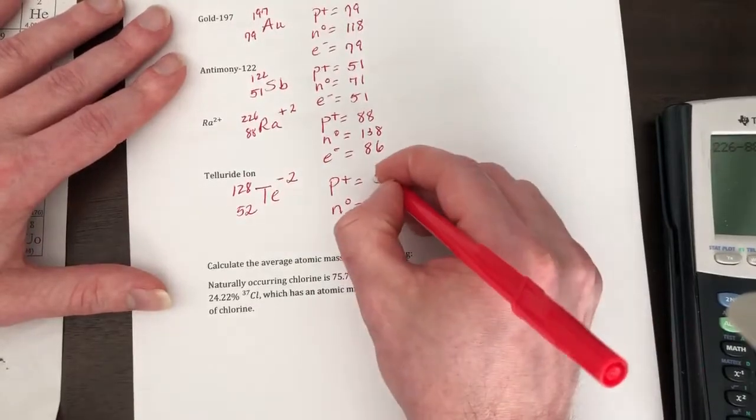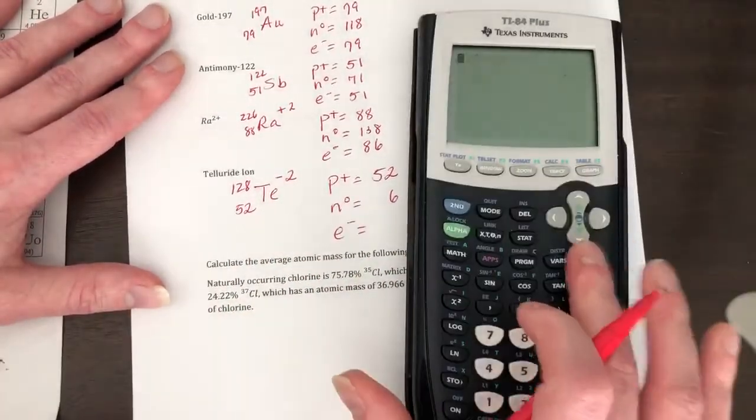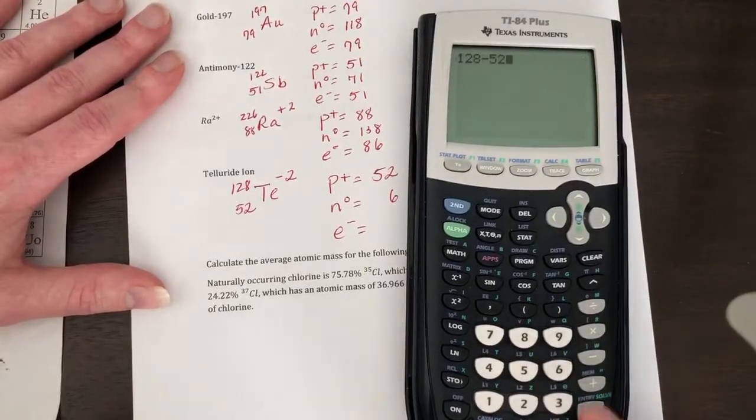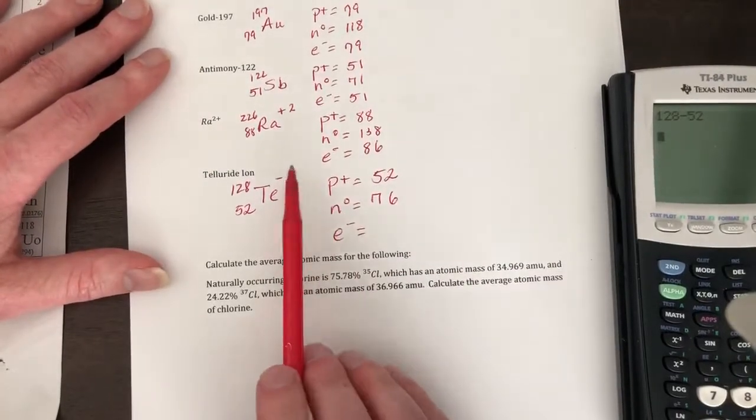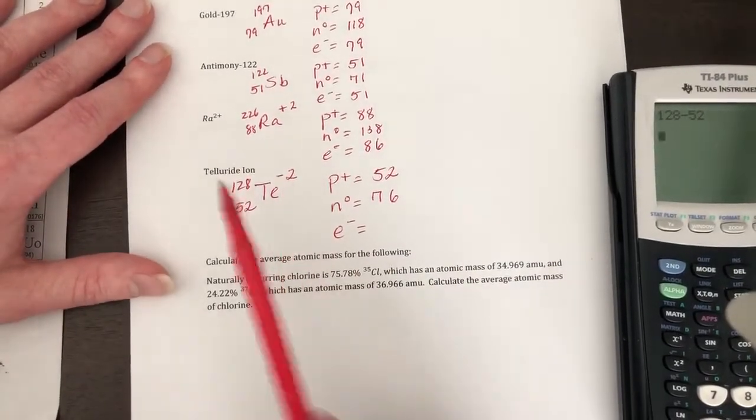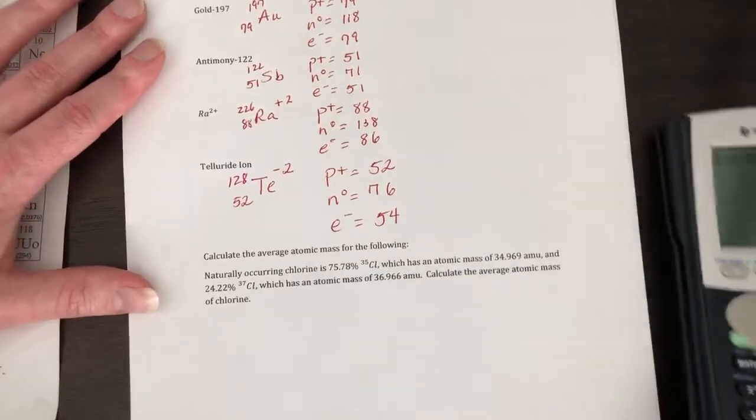Your neutrons are gonna be 128 minus 52, which is 76. And your electrons, so it has a negative 2 charge, so it means it gained two electrons, so it's gonna have 54 electrons.